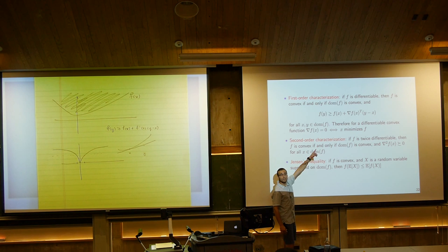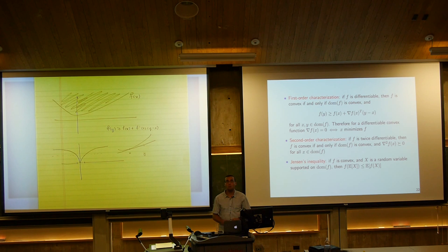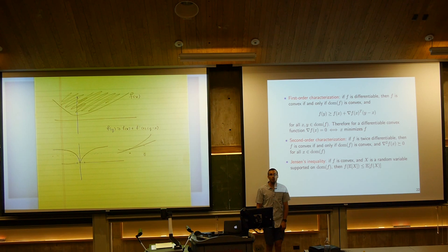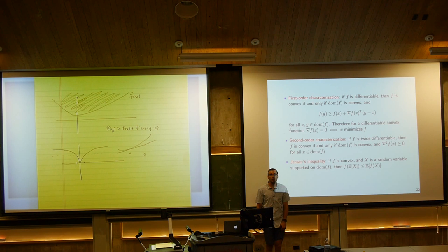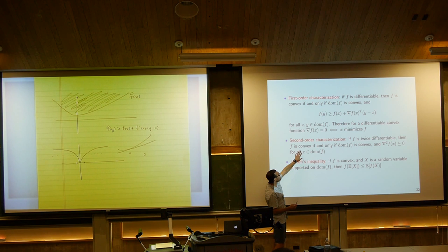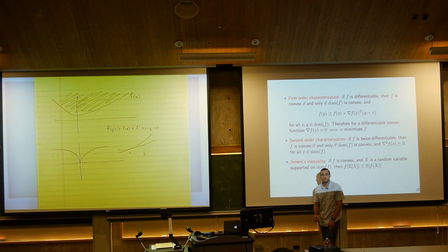Another characterization is based on the second derivative. If f is twice differentiable, it's convex provided the Hessian matrix is positive semi-definite at every point x. In one dimension, the second-order condition is just that f''(x) ≥ 0. In multiple dimensions, the analogous statement is that the Hessian is positive semi-definite at all x — it's really the same idea.